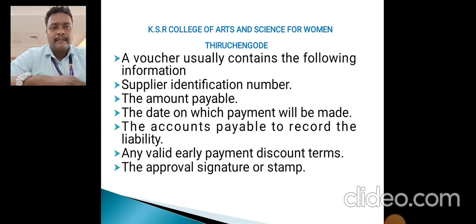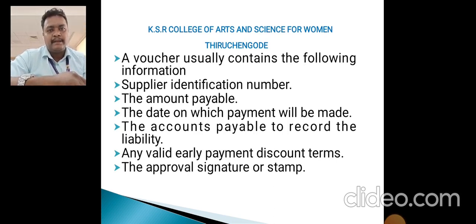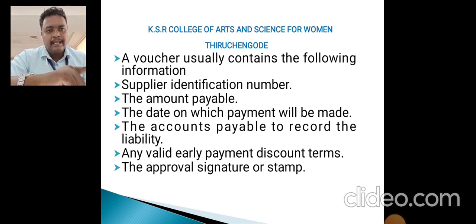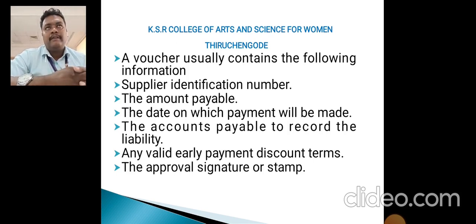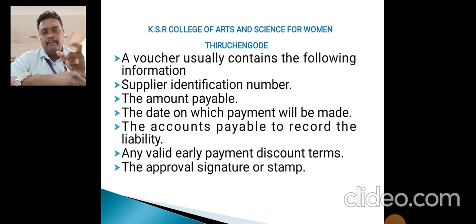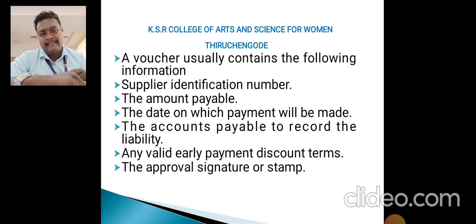A voucher usually contains the following information: the supplier identification number, the amount payable, the date on which payment is made, accounts payable to record liability, any valid early payment discount specifically mentioned for traders, buyers, or sellers, and the approval signature or stamp.